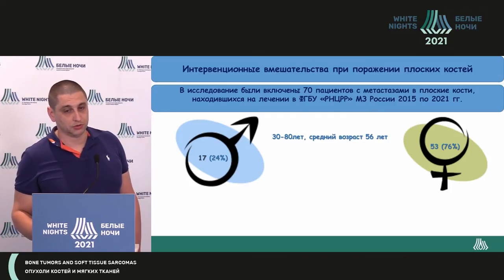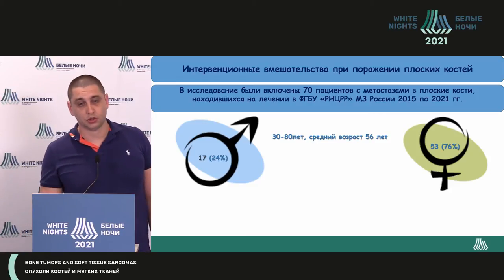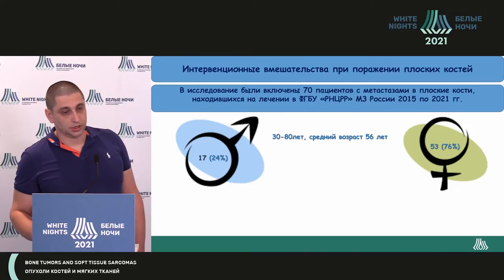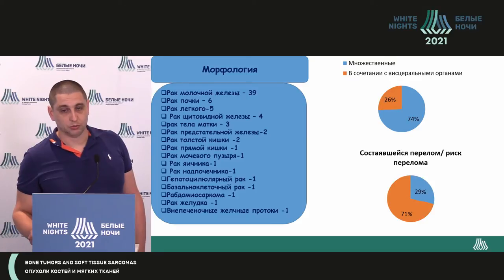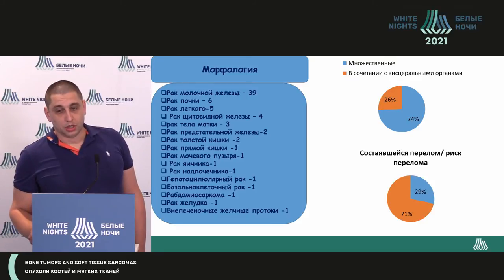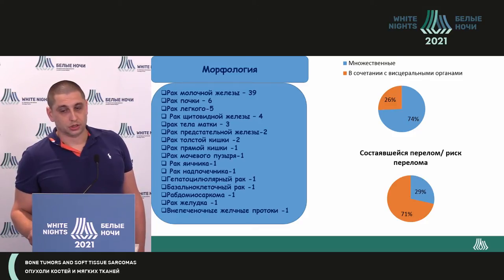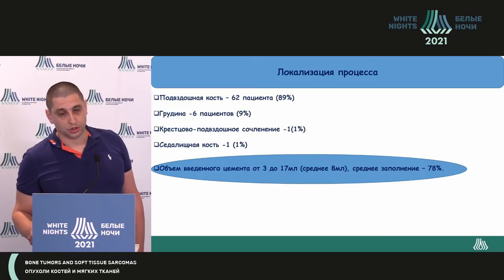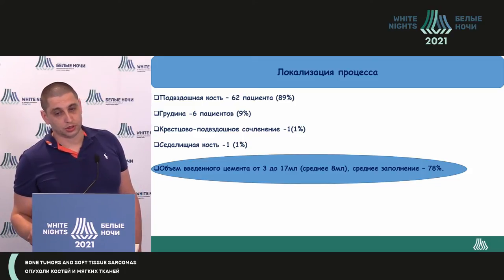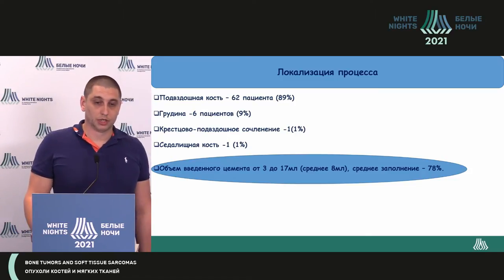Our experience covers 70 patients with metastasis in the flat bones, with an observation period between 15 and 21 months, allowing us to assess results in dynamics. Morphologically, this is predominantly breast cancer, as well as kidney cancer and lung cancer. Cases include multiple and visceral organ involvement with fracture and risk of proximal fracture — involving the iliac bone, thoracic bones, and sacral and iliac bones.